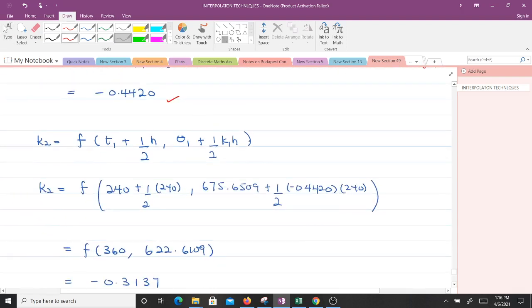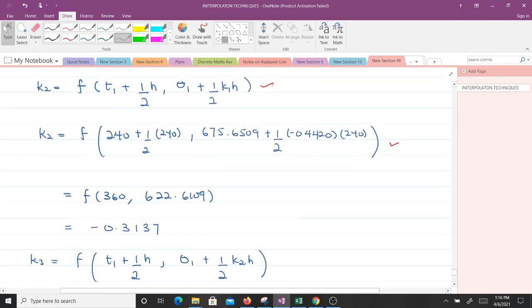K2 is given by this. When you make substitution, you have this. And finally, we get F of 360, 622.6109. When you put that into F of T theta, you end up with negative 0.3137.